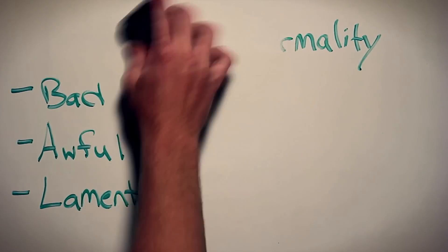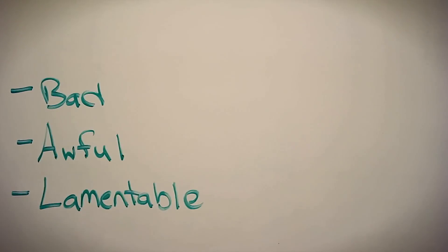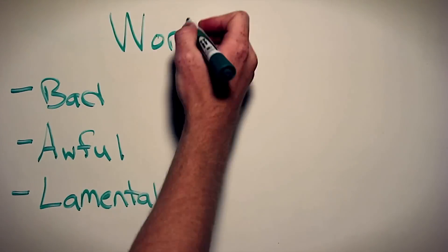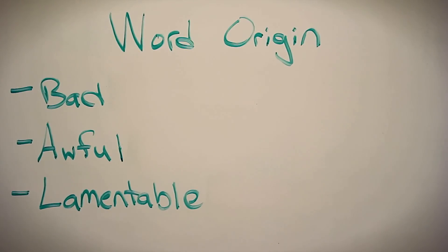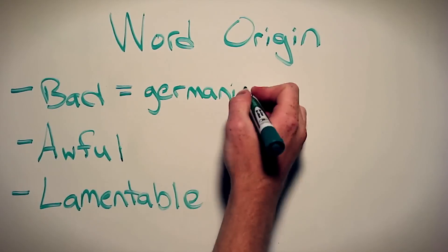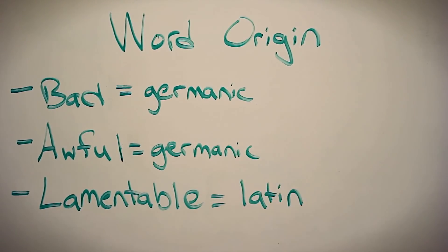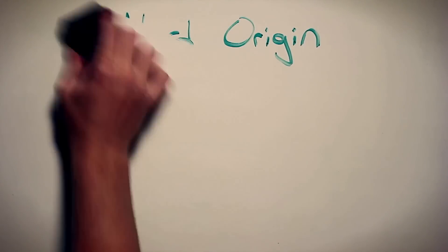There's a reason for this, and it has to do with word origin, which quite simply is the root language for a specific word. For instance, the words bad and awful have Germanic origins, whereas lamentable comes from Latin. This is a common pattern among words. Those with higher degrees of formality often find their roots in Latin, or words of lower formality often find their origin in Germanic languages.